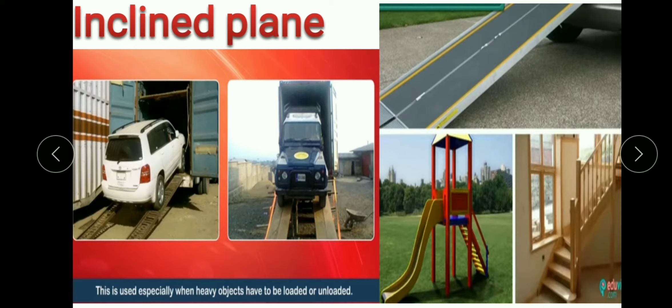Next machine hai inclined plane. Inclined plane ek lakdi ka ya iron ka plank hota hai jiska use heavy saamaan ko upar chadhane ya neeche utarne ke liye kiya jaata hai. Jaise aap picture mein dekh sakte hain, gadiyon ko truck mein chadhane ke liye ek plank ka use kiya gaya hai. Jo slide hoti hai jis par aap khelte hain wo bhi inclined plane ka example hai. Stairs aur ladder bhi inclined plane ke examples hain.